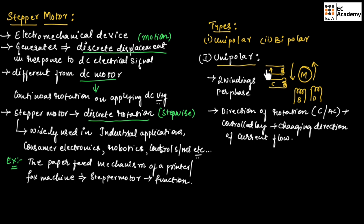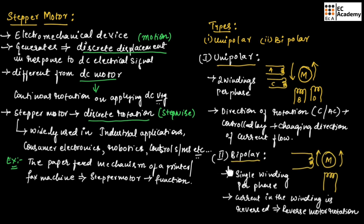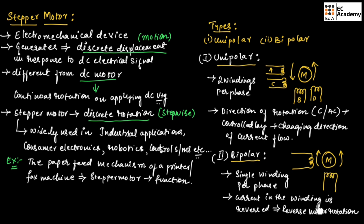Only one of the coils will carry the current at a time. The second type is bipolar stepper motor, which consists of a single winding per phase — one for phase 1 and one for phase 2. Current in one direction in the coil makes the motor rotate in clockwise direction, and if we reverse the current direction, the motor will rotate in anticlockwise direction. So, the current in the winding is reversed to reverse the motor rotation.